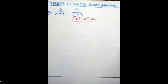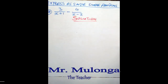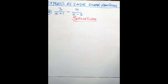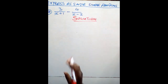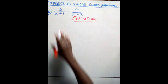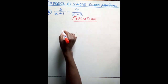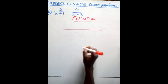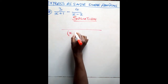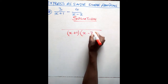We will be posting videos every day. The task on the solving board is to simplify or to express 3 over (x plus 1) minus 4 over (x minus 2) as a simple single fraction in its simplest form or in its lowest form.